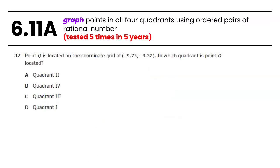As we move into TEKS 6.11a, students are going to have to graph points in all four quadrants using ordered pairs of rational numbers. Now that we have STAAR 2.0 and graphing item types, this is a perfect TEKS to ask a graphing question where students would be given an ordered pair and have to plot that point on a coordinate grid. But in the era of multiple choice questions, this had to be tested in a lot of unique and different ways.